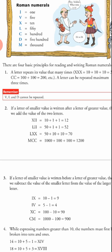We cannot write X four times to represent 40 — there are different ways to write 40, which we will cover in further classes. Also remember that V, L, and D cannot be repeated. While writing Roman numerals, keep all these points in mind.